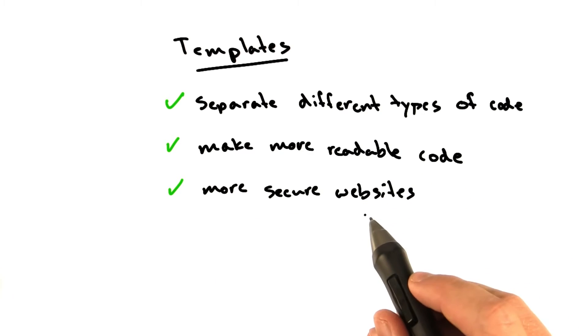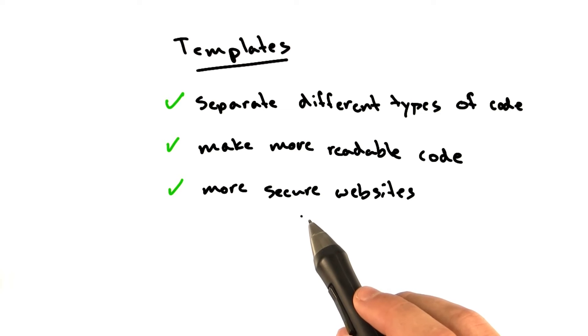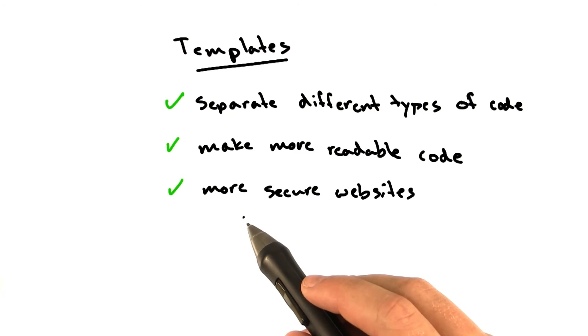They make more secure websites. If you use the auto-escaping feature of Jinja or other templating languages, you don't have to worry so much about users putting insecure, malicious data into your website.